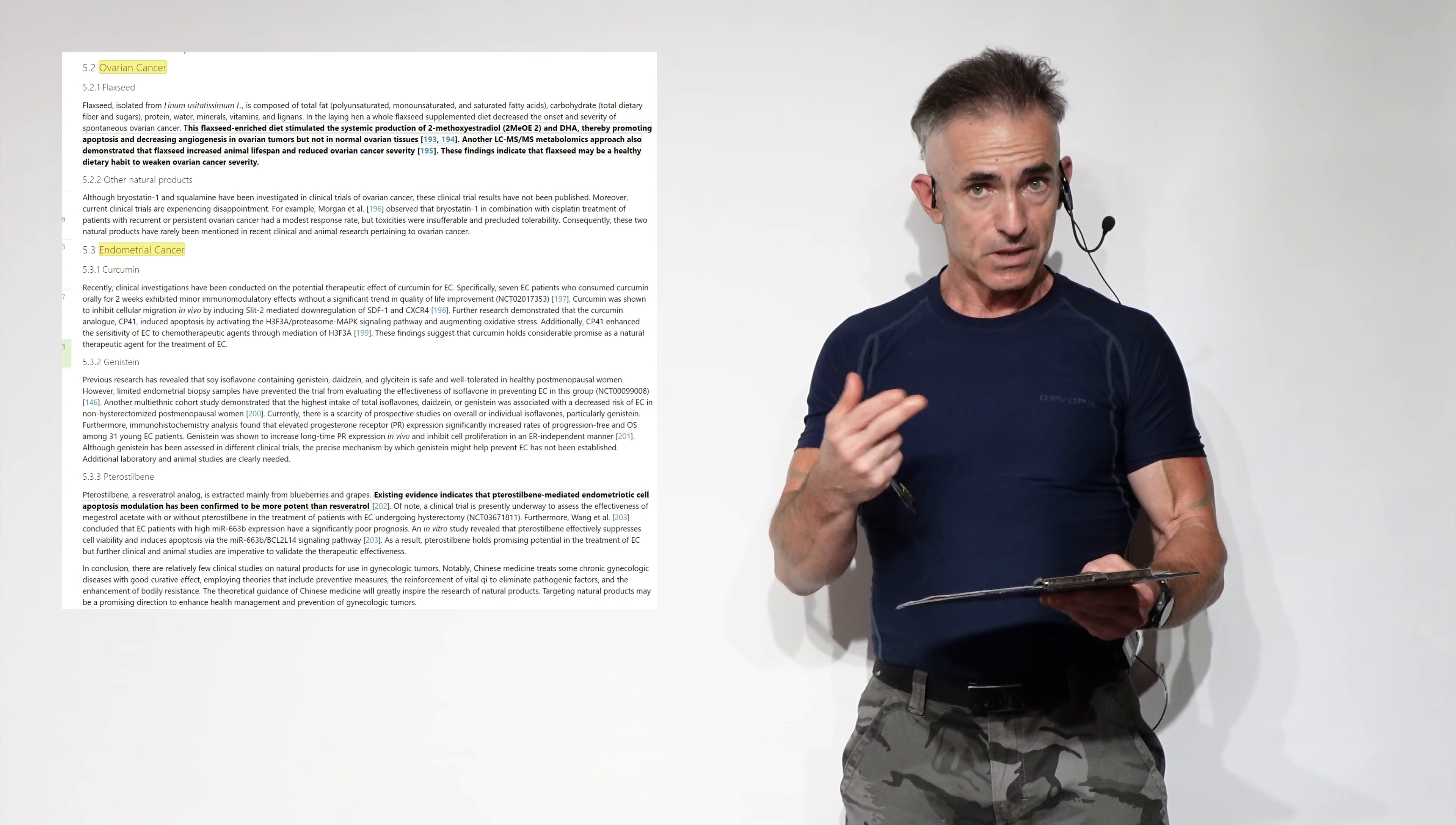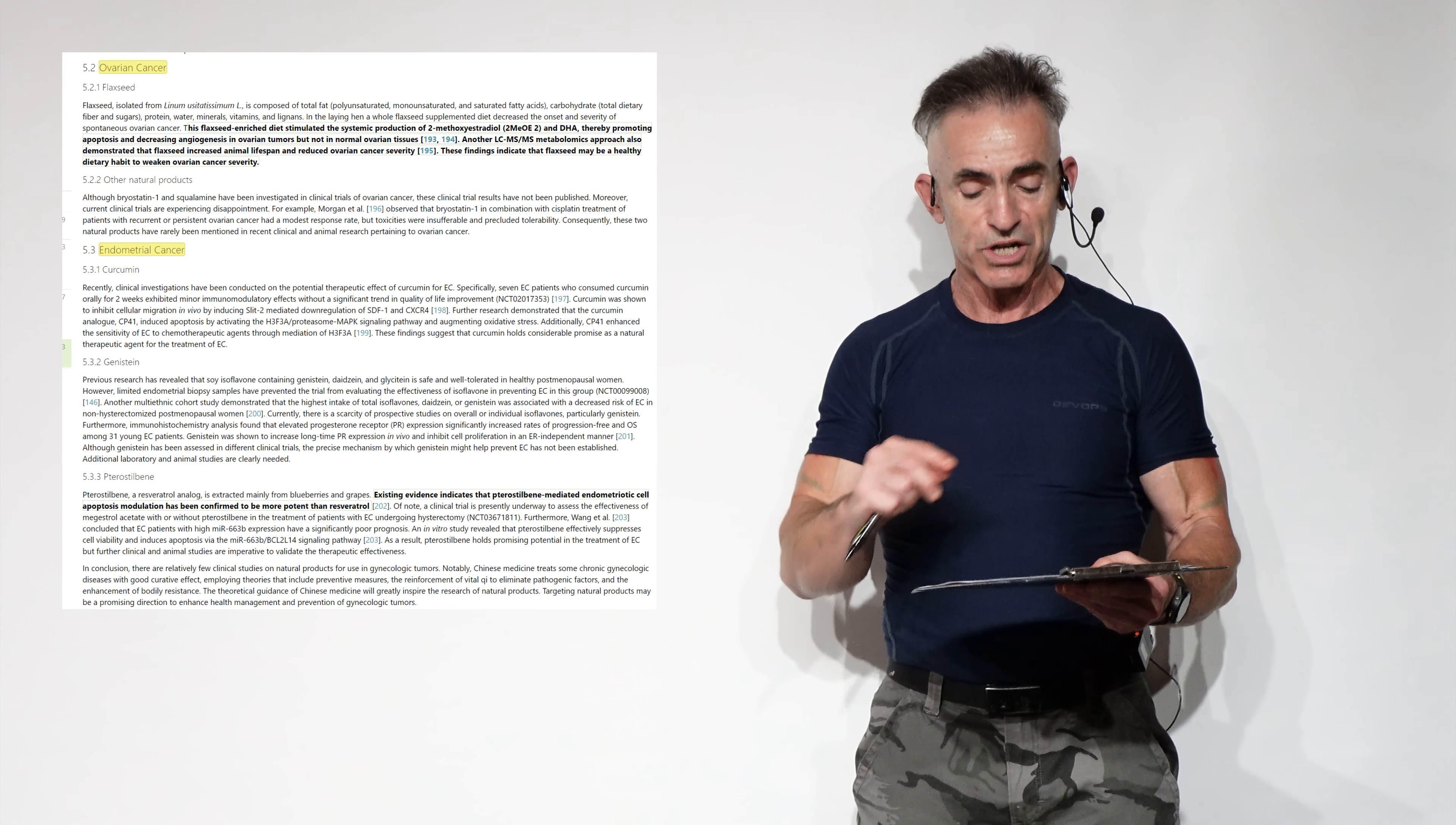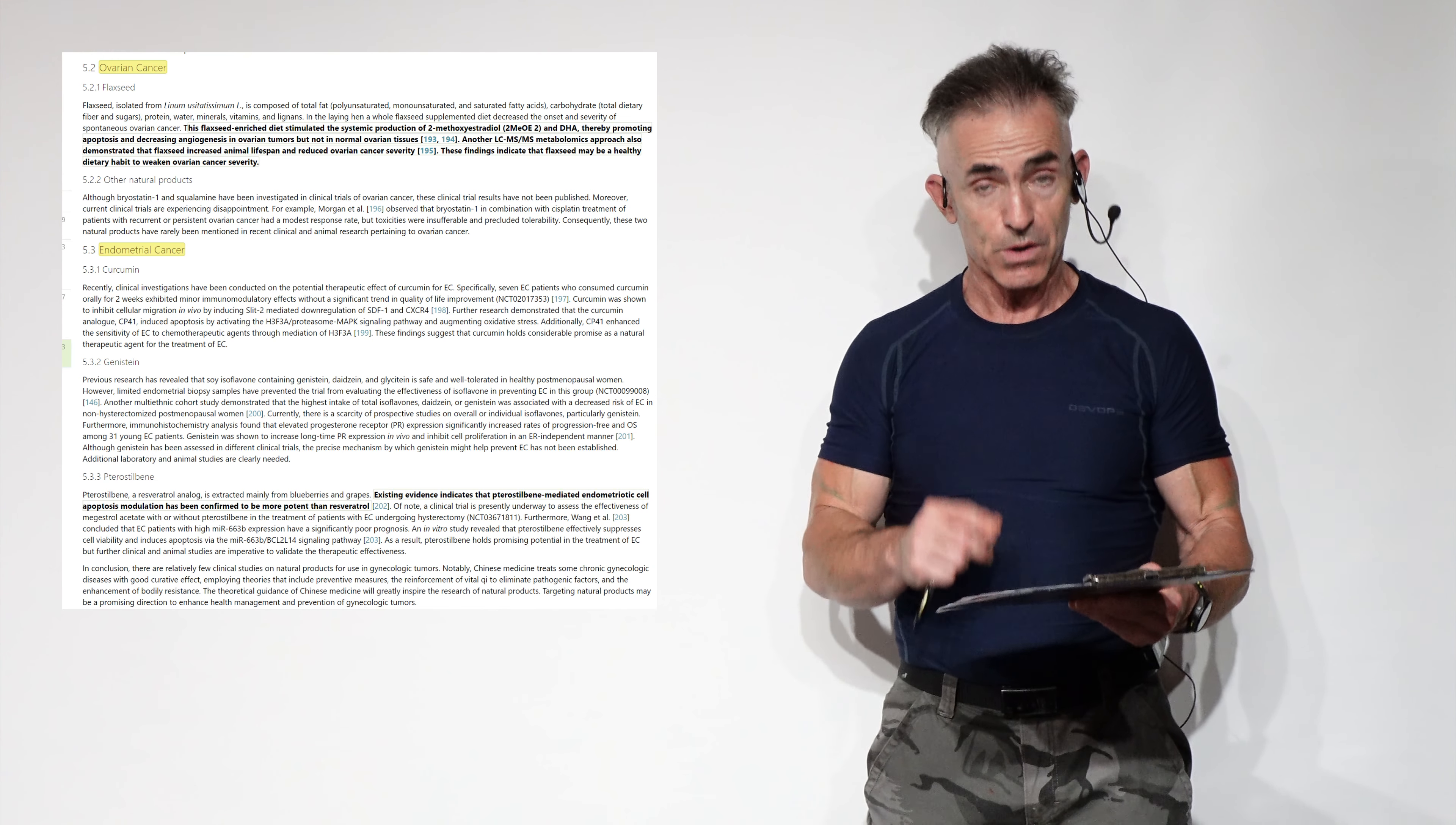Ovarian cancer. Now, as I preluded prior, this flaxseed-enriched diet stimulated the systemic production of 2-methoxyestradiol and DHA, thereby promoting apoptosis and increasing angiogenesis in ovarian tumors, but not in normal ovarian tissues. Another LC-MSMS metabolomics approach also demonstrated that flaxseed increased animal lifespan and reduced ovarian cancer severity.